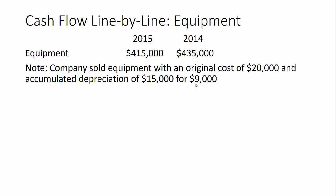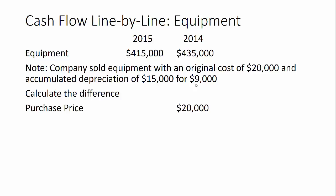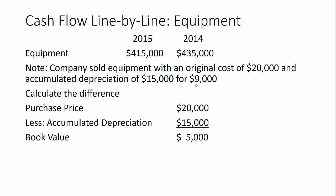The first thing we do is calculate the difference in the account — always do this first. The difference is twenty thousand dollars: the balance went from 435 to 415. When you sell an asset, you remove the asset from the books — that's the twenty thousand — and you also remove the accumulated depreciation of fifteen thousand. So the book value is five thousand (twenty minus fifteen). We sold it for nine thousand, which means there's a gain of four thousand dollars.